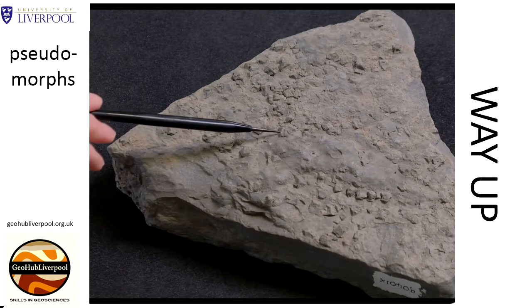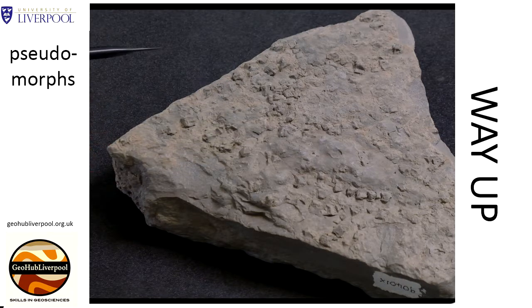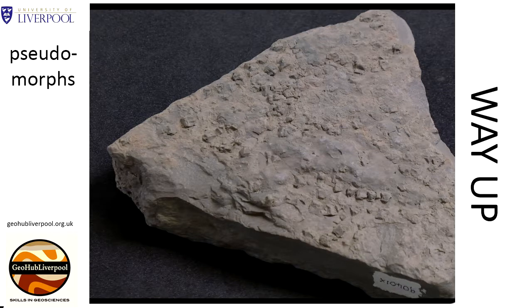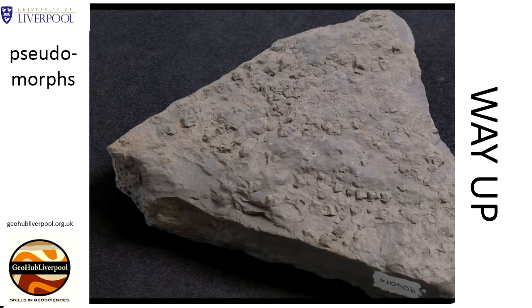What you see on this surface is what formed after the surface was flooded by sediment-laden water. The halite crystals were dissolved and the hollows left were then filled with sediment. This sediment preserves the shape of the salt crystals. These pseudomorphs are sole structures — that is, structures that formed at the base of a bed.